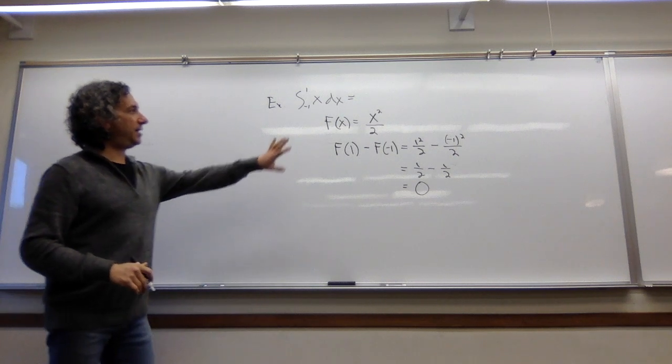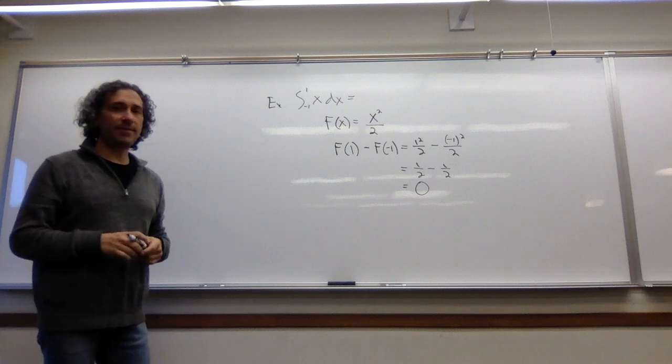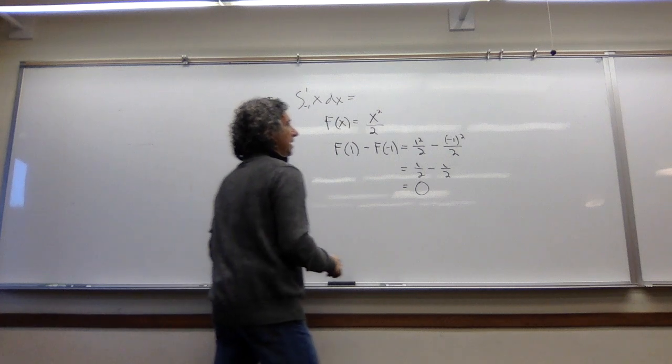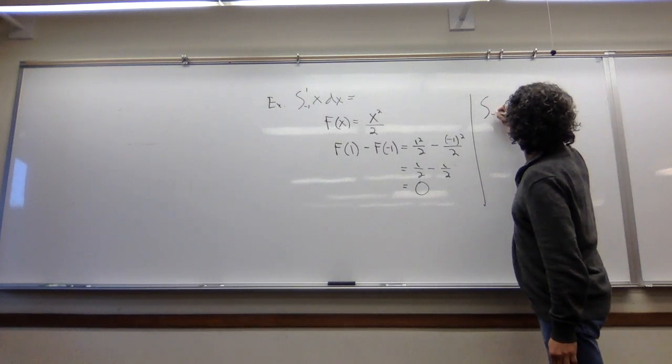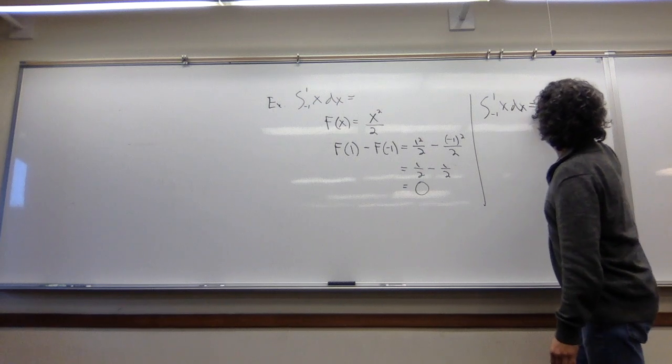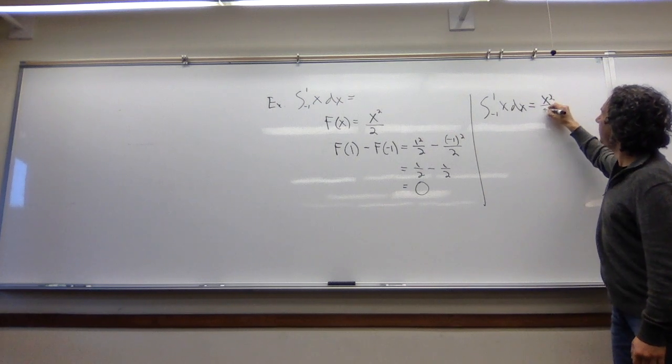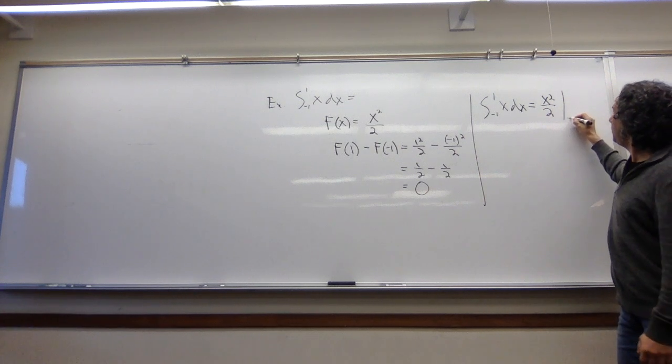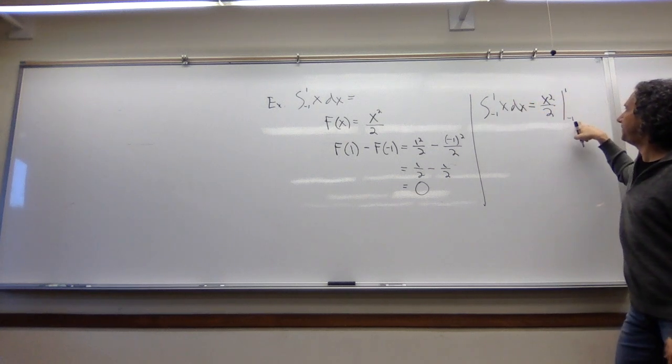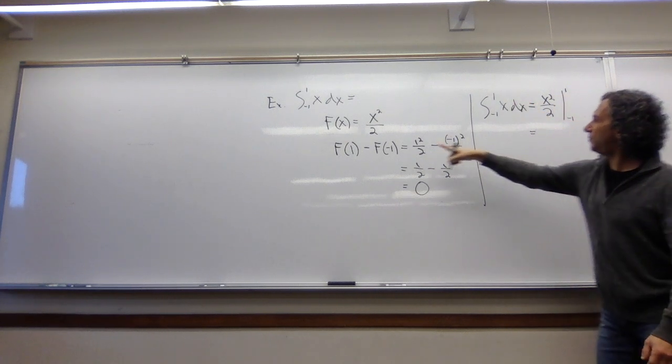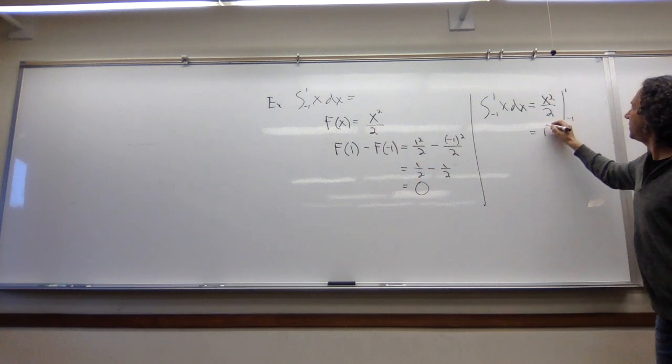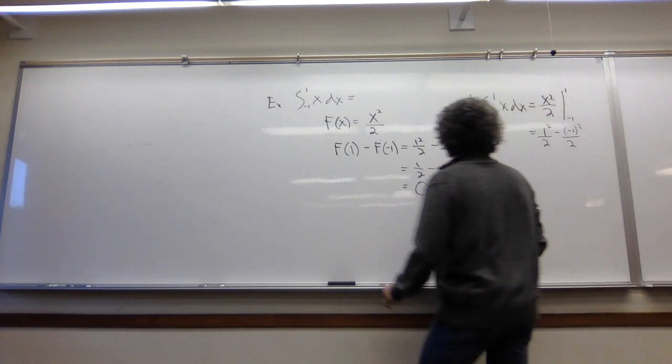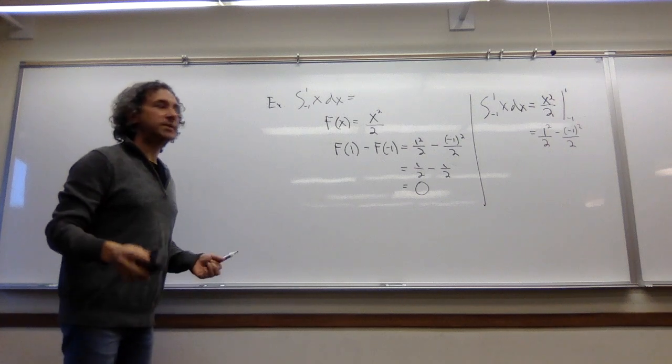Let me introduce some shorthand notation with this, and then I'll give you one more example before we prove it. What we do is, once we come up with this function, we write it here, and then you write a vertical bar, and then you put in the values that you're evaluating it at. Then you just plug them in. So we skip all of that stuff over there. So this is the typical way you would see this problem worked out.